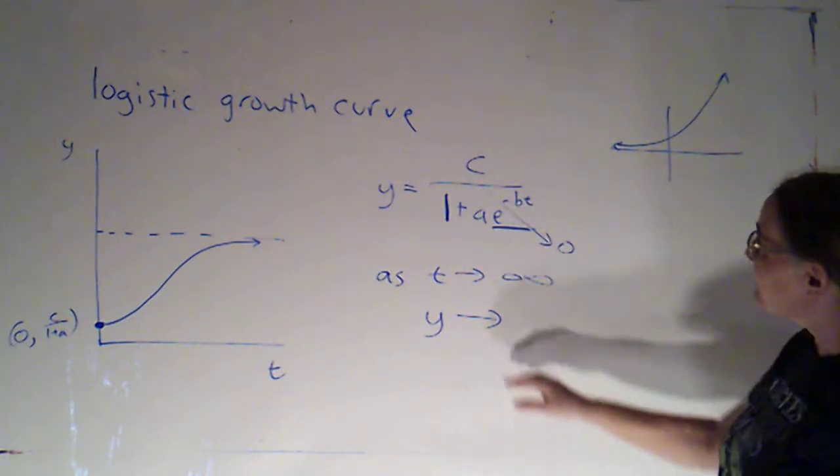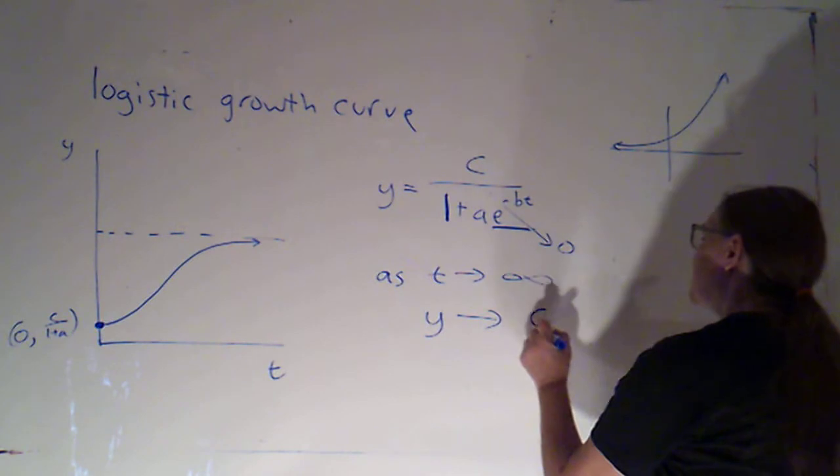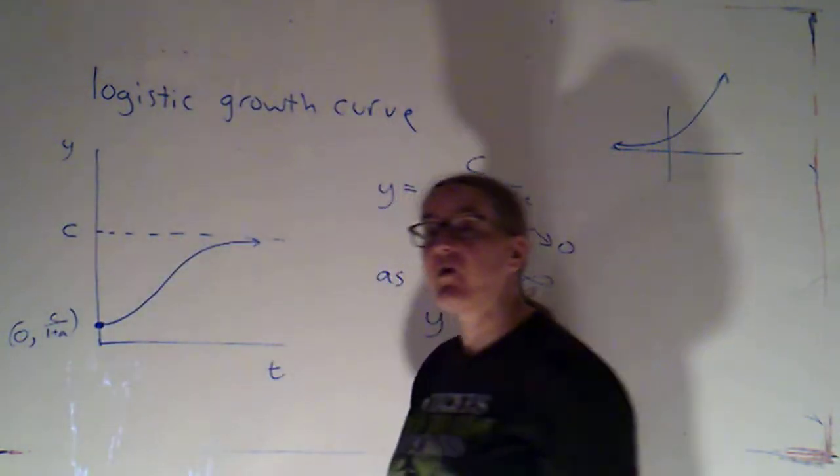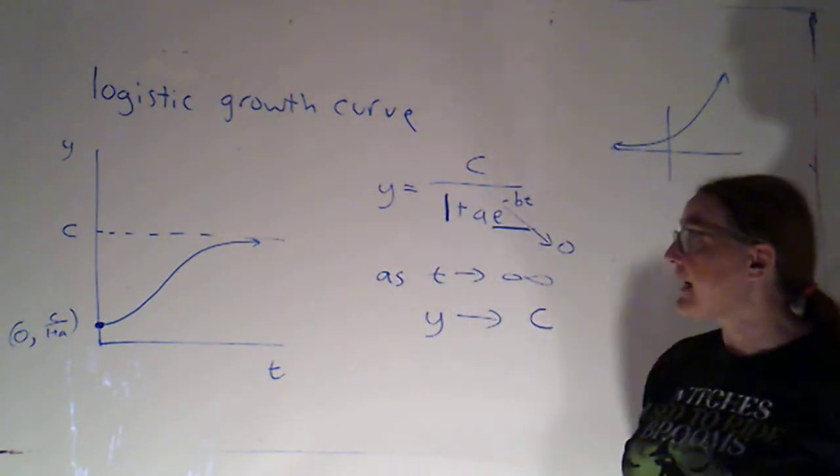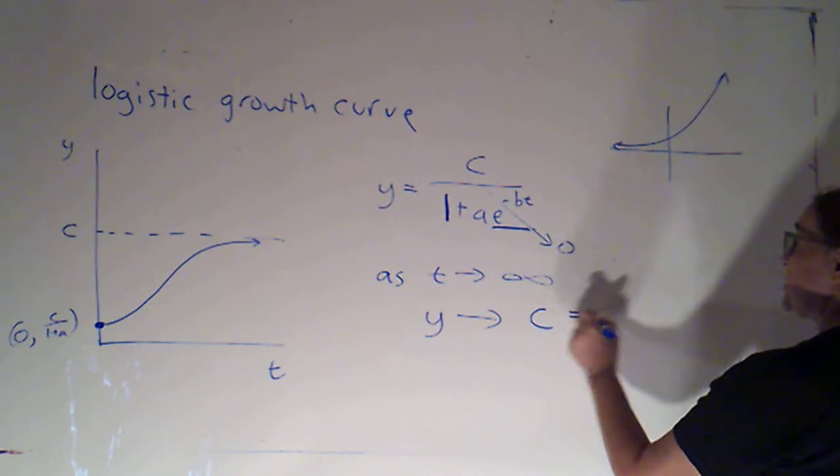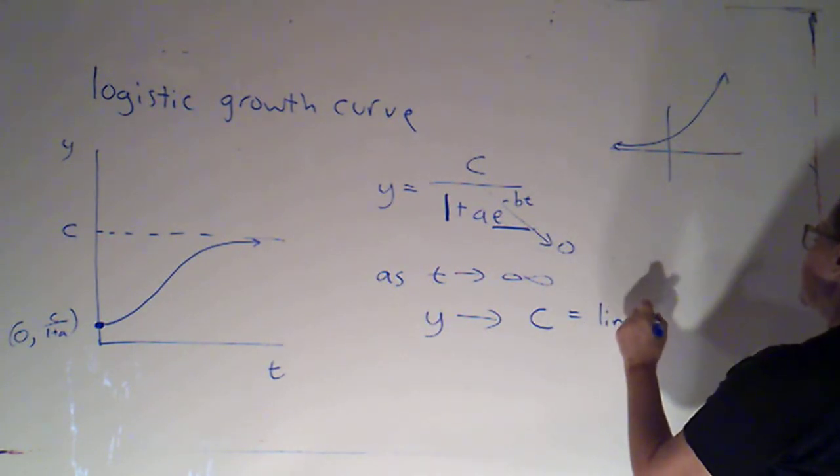So y is going to be approaching c over 1, which is just c. For a population, we would call that the carrying capacity. For, in general, for a logistic curve, because it can be used for things other than populations, it's also called the limiting value.